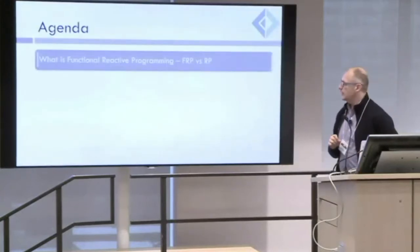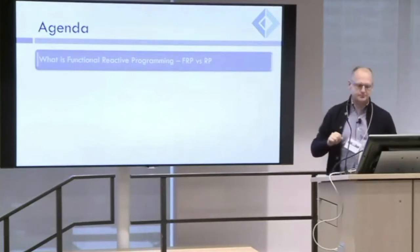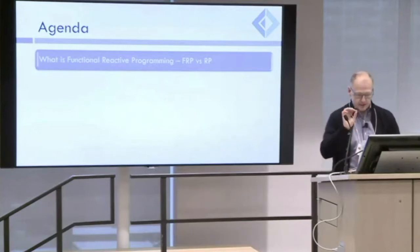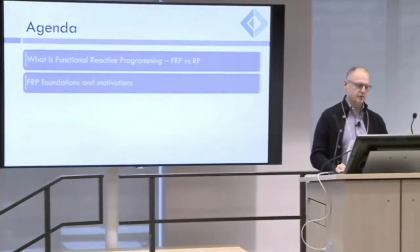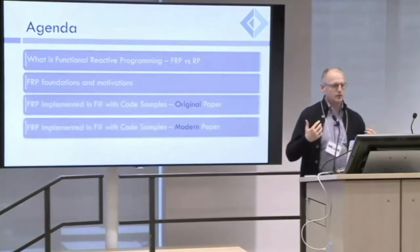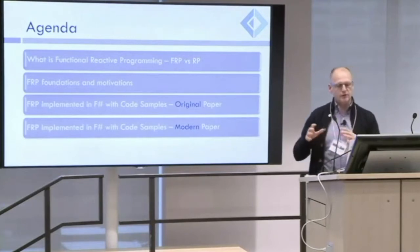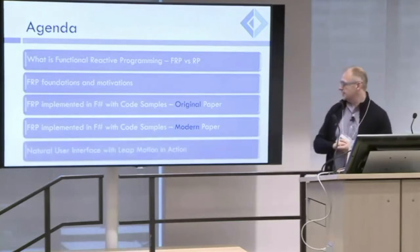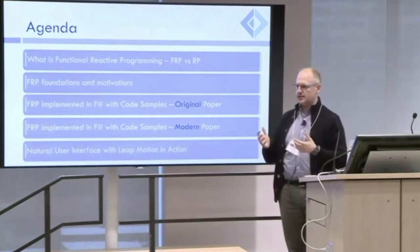I will cover what is FRP, and a little diversion — the confusion between reactive programming and FRP. It will be a whole history about FRP. Then we're going to cover the foundation and motivation about functional programming, and I'm going to cover the implementation I did in F-sharp, both following the first original paper and the more modern one. And then we're going to cover the code sample. I plan to spend about 25 minutes on slides and the rest on code.